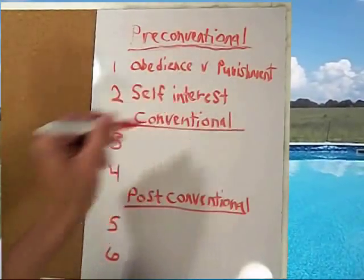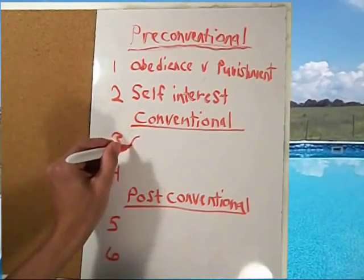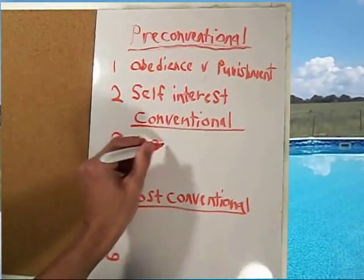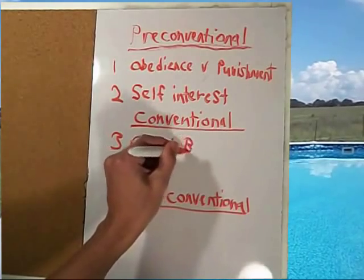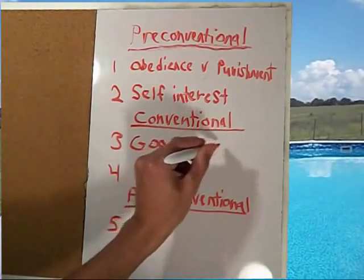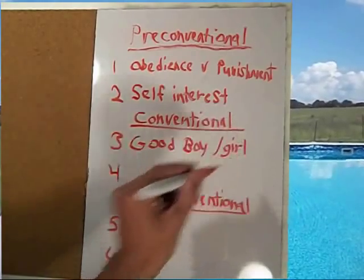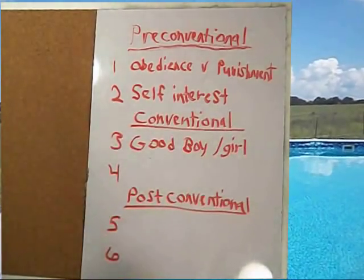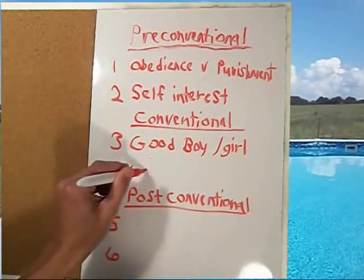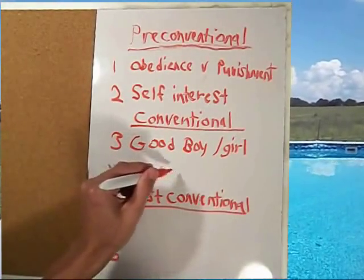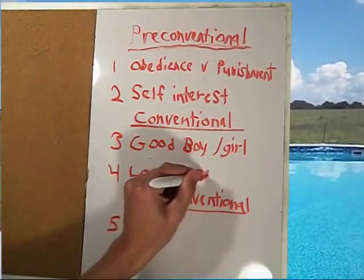Stage three is the good boy, good girl orientation — this follows social norms and conformity. Stage four is the law and order orientation — laws must be obeyed to maintain social order.